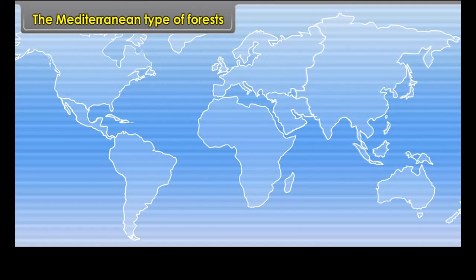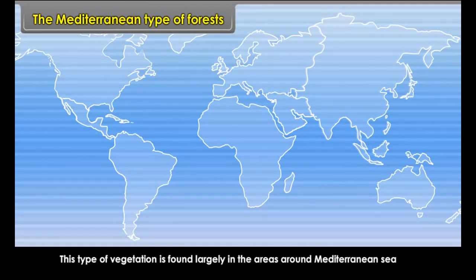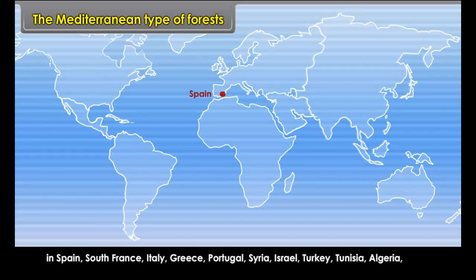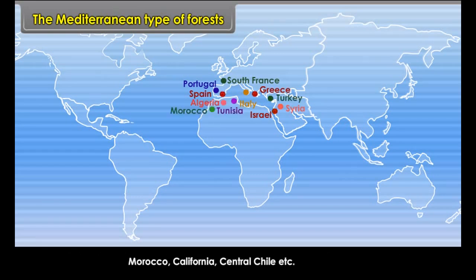The Mediterranean Type of Forest. This type of vegetation is found largely in the areas around the Mediterranean Sea in Spain, South France, Italy, Greece, Portugal, Syria, Israel, Turkey, Tunisia, Algeria, Morocco, California, Central Chile, etc.